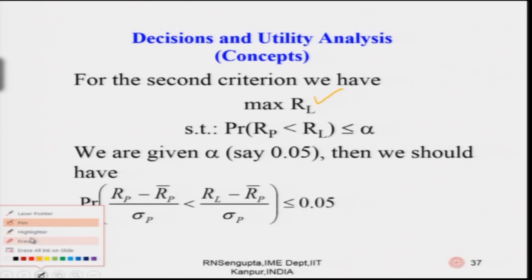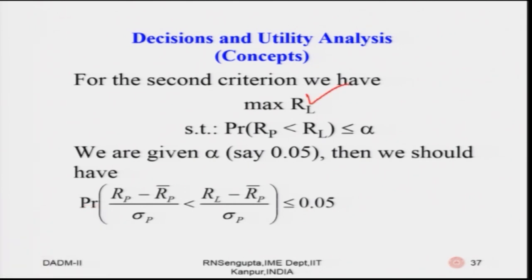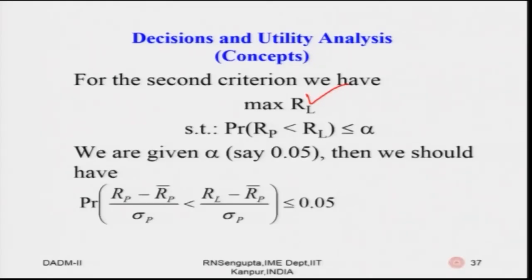For the second criteria, we already had: maximization of R_p subject to a constraint. You maximize R_p − R_L, and you bring in the constraint that the probability of R_p less than R_L is kept fixed at alpha. You are trying to push R_L to the right — from my view of the distribution, R_L is on the left and you are pushing it rightward. Now, if the weights change, R_p changes.